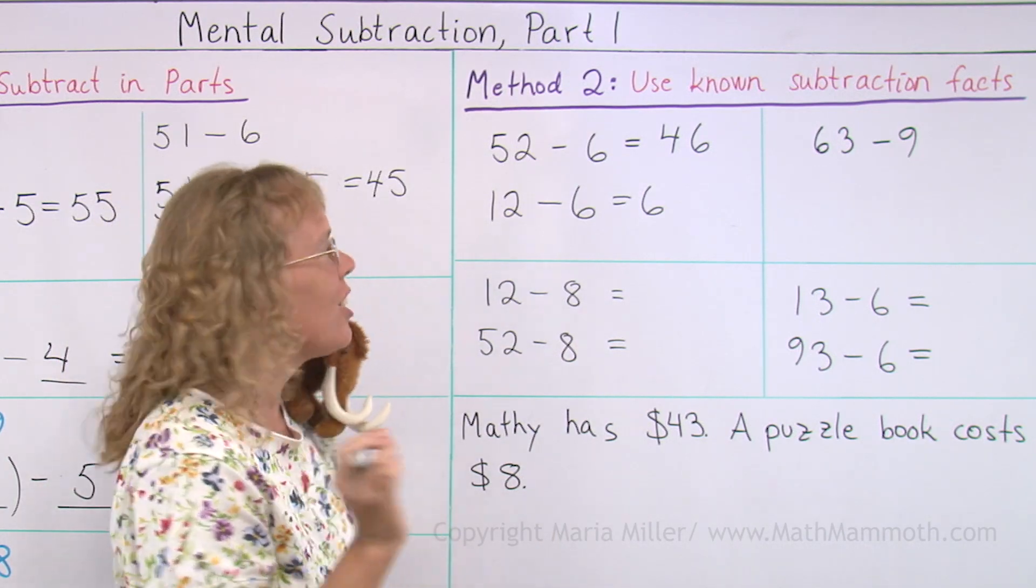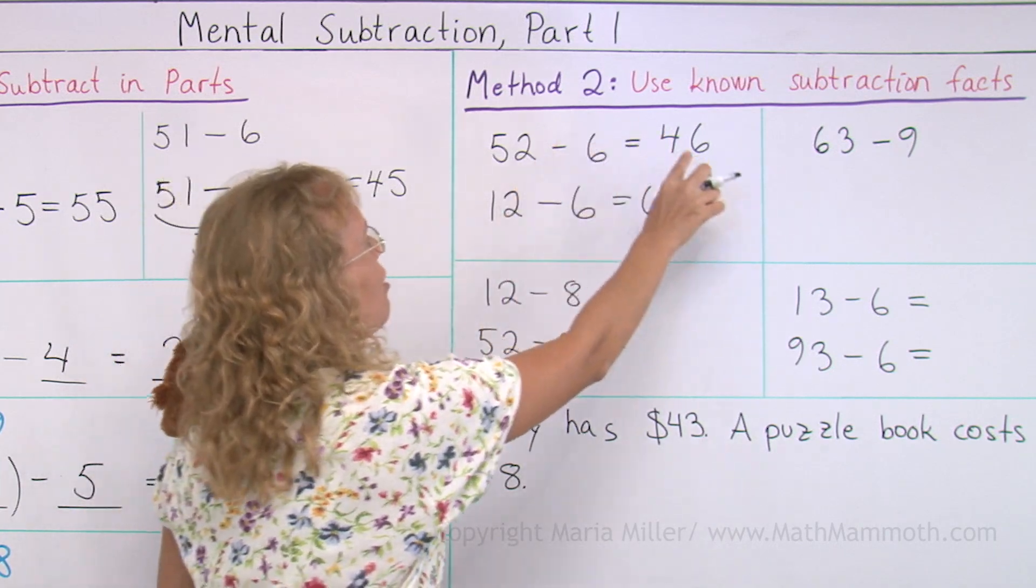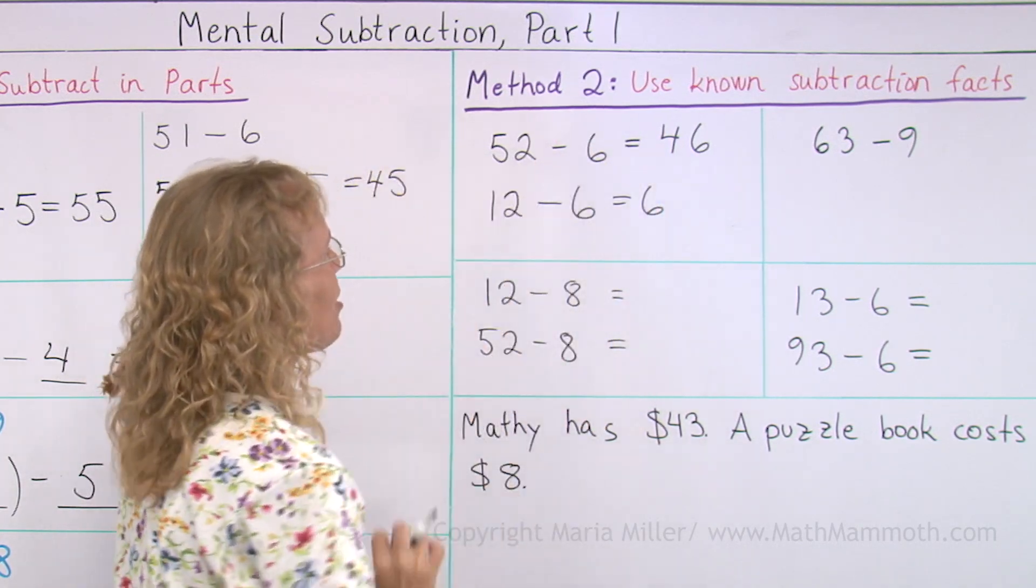You can also think of addition here. 6 plus 6 equals 12. 46 plus 6 equals 52.